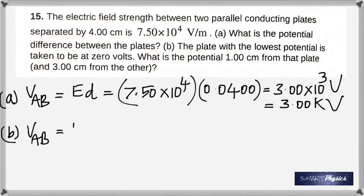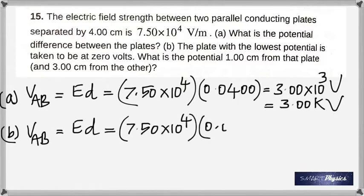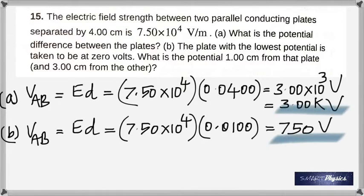Second case, you've got to find it one centimeter from that plate. The field strength is the same, but this time you are only one centimeter away, which is 0.01 meters, so it is 750 volts. Remember you're moving from a high potential plate to a low potential plate - the negative plate is taken to be at zero volts. As you keep going, it keeps on dropping until when you reach the other plate it becomes zero.